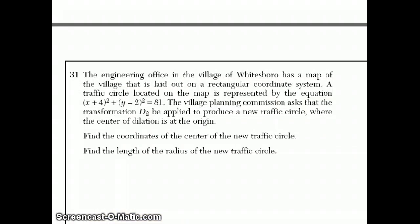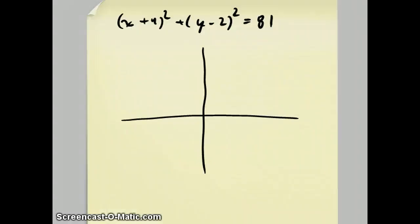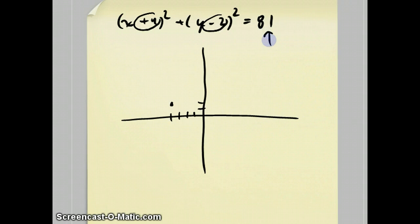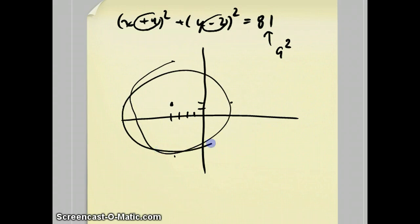Question 31: they have an equation for a circle, x plus four squared plus y minus two squared equals 81. They want to dilate this by a factor of two for each of the points, and they want to know the coordinates of the center and the length of the radius. The center of the circle — if you change the sign of each term — gives the center of the original circle as minus four, two. The square root of 81 gives a radius of nine, so the original circle extends nine right, nine left, nine up, nine down.